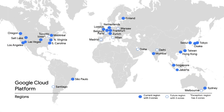Since all of our regions offer multiple zones, the first step towards a proper high-availability architecture in Google Cloud should be to distribute your instances across different zones within the same region. Our high-performing network connection ensures latency below one millisecond from one zone to another in the same region, which makes synchronous replication between systems a valid option without keeping your users waiting.